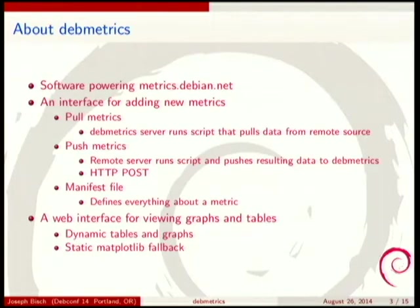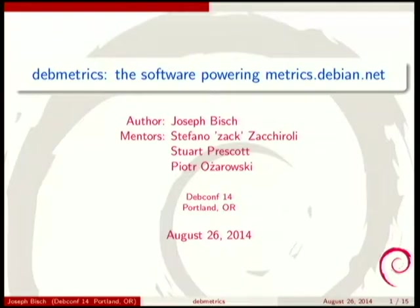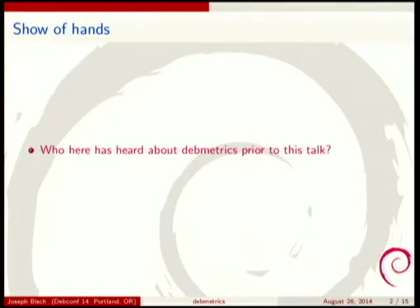Metrics are defined by a manifest file. The manifest file contains all sorts of data about a metric. To add a new metric, you should submit a patch to me or the QA mailing list. The patch should add a manifest file and also a script if the metric is a pull metric.